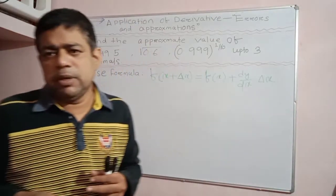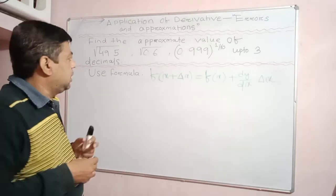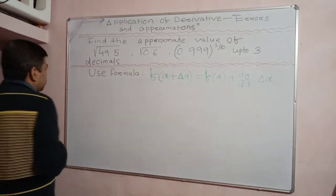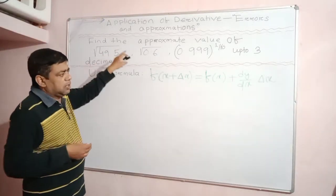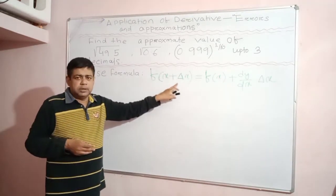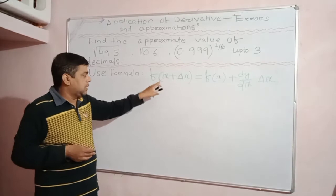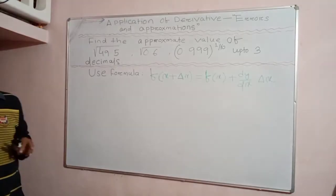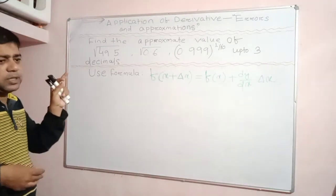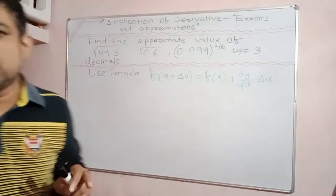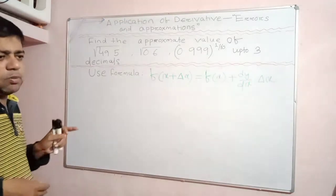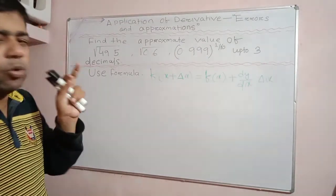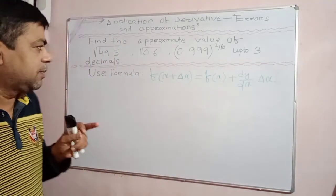This is an important application of derivatives. Here I am going to discuss how to find the approximate values of radical numbers or exponential numbers using an interesting formula discussed in the previous class. Using this formula, you can find the approximate value of numbers like the square root of 49.5, the square root of 0.6, and 0.999 to the power 1 by 10, each up to 3 decimal places.